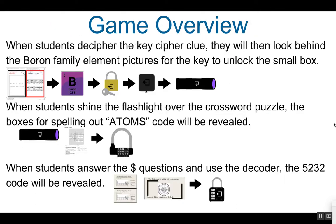The game overview. When students decipher the key cipher clue, they will then look behind the boron family elements for the key to unlock the small box, which will allow them to gain access to the UV flashlight. When students then use that flashlight over the crossword puzzle, the boxes for certain letters to spell out the word ADAMS will be revealed. When they unscramble those, they will have the code to the ABC multi-lock.